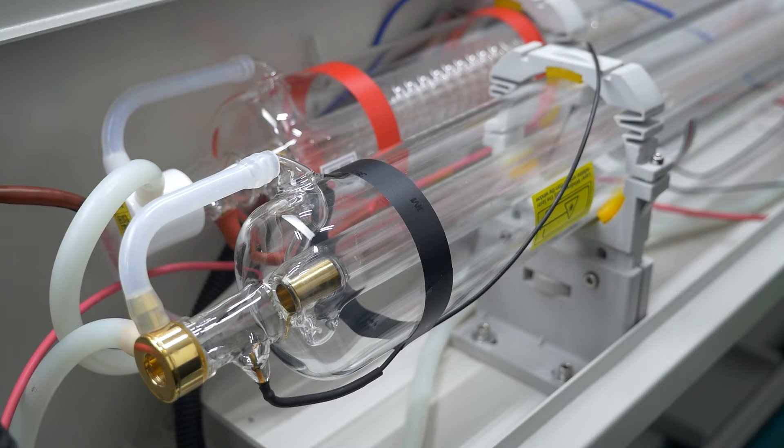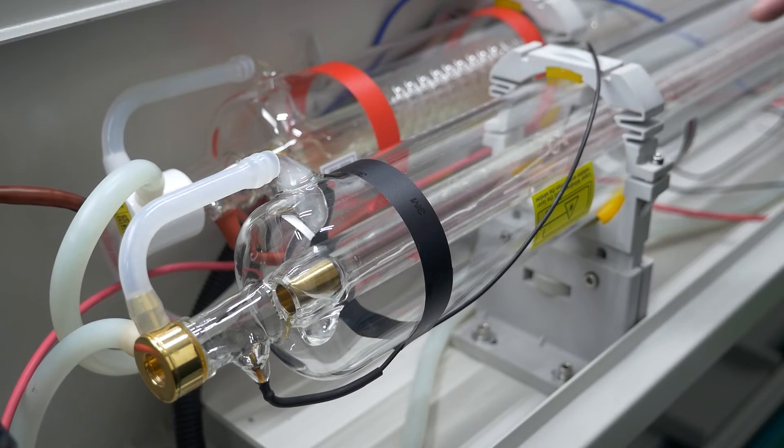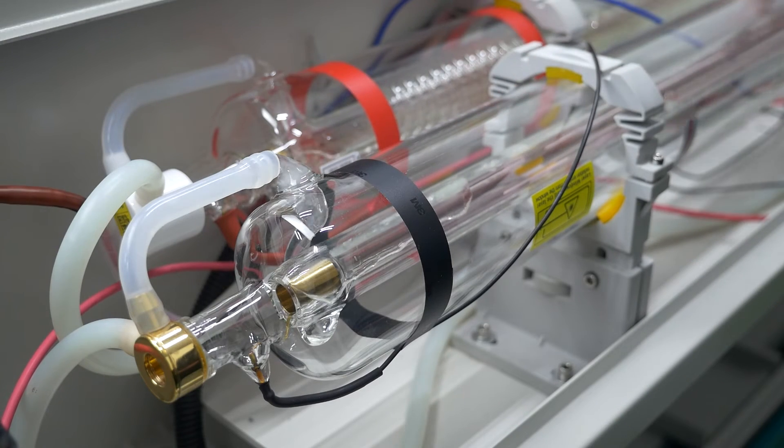Start the chiller. Make sure that the water is supplied to the laser tube in the direction of the laser beam exit. Look closely at the air bubbles inside the laser tube cooling circuit.